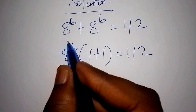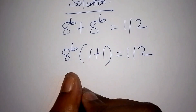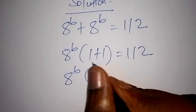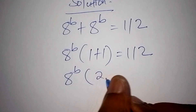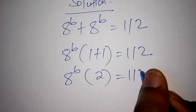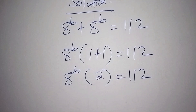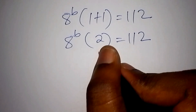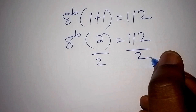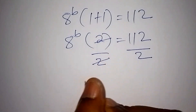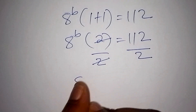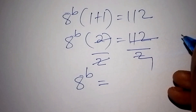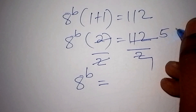So having factorized 8 to the power of b plus 8 to the power of b, we now have 8 to the power of b multiplied by bracket 1 plus 1, that is 2, equals 112. The next step is to divide both sides by 2. So 2 divided by 2 cancels, giving us 8 to the power of b equals 56.